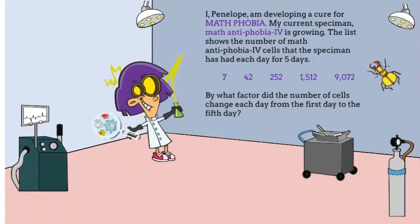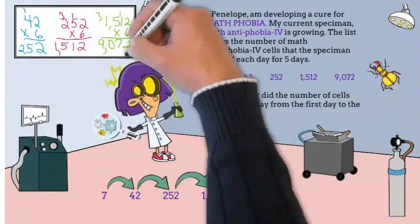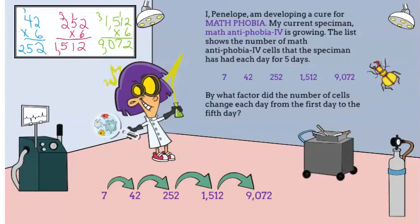I'm going to share my special project with you. I, Penelope, am developing a cure for math phobia. My current specimen, math antiphobia 4, is growing. The list shows the number of math antiphobia cells that the specimen has had each day for five days. By what factor did the number of cells change each day from the first day to the fifth day? I know that 7 times 6 is 42, but does that work for the rest of the numbers? Let's do our calculations and find out. It works — six is our scale factor.